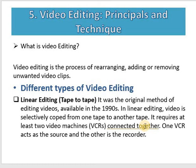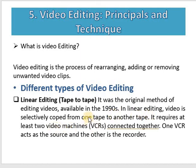Video editing is the process of rearranging, adding, and removing unwanted video clips. There are different types of video editing. The first type is linear editing, also known as tape-to-tape editing. It was the original method of editing videos, available in the 1990s. In linear editing, video is selectively copied from one tape to another. It requires at least two video machines, like VCRs, connected together — one VCR acts as a source and the other as a recorder.